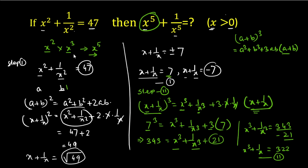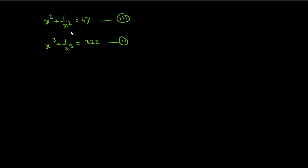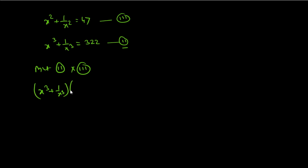To find x⁵ + 1/x⁵, we multiply x² and x³ values together. We multiply equation 2 (x³ + 1/x³ = 322) by equation 3 (x² + 1/x² = 47). On the right-hand side we have 322 multiplied by 47.